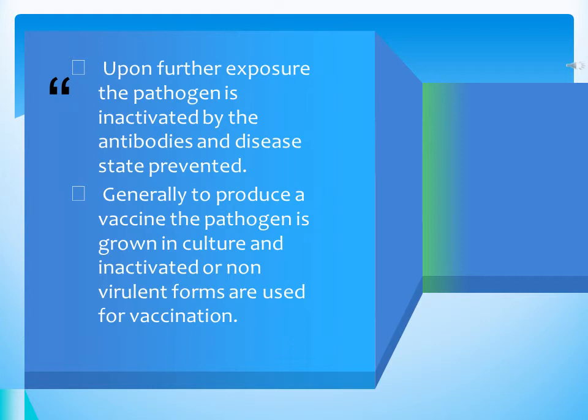Generally, for the production of a vaccine, the pathogen is grown in culture. After that, it is inactivated, or non-virulent forms are produced. Only those non-virulent, attenuated, or weakened forms of the particular causative agent are used for the purpose of vaccination.